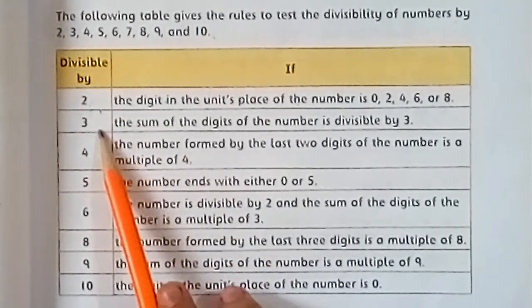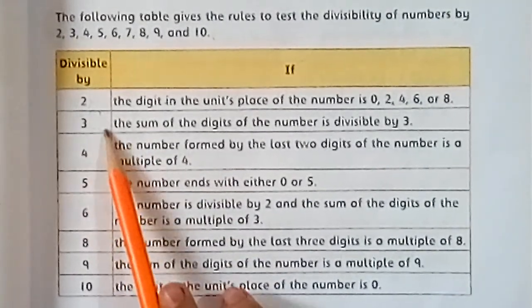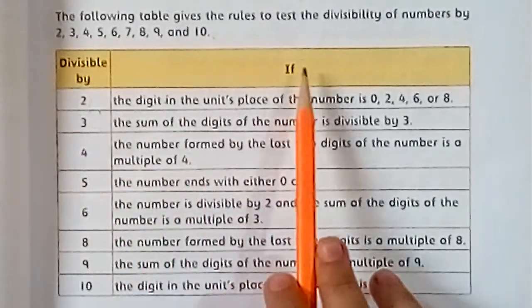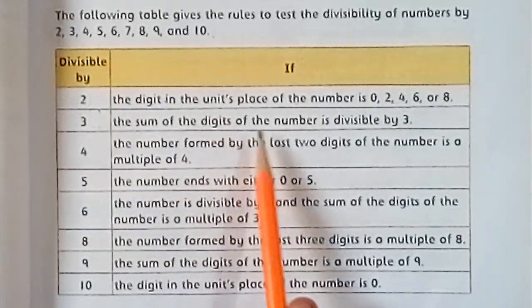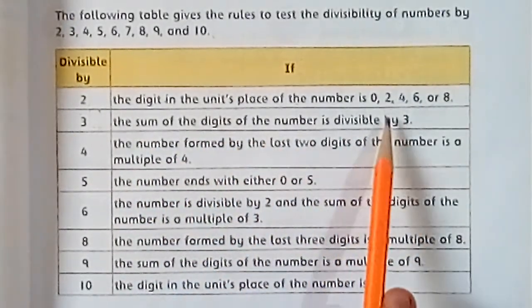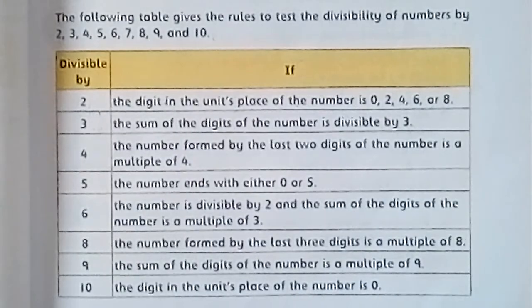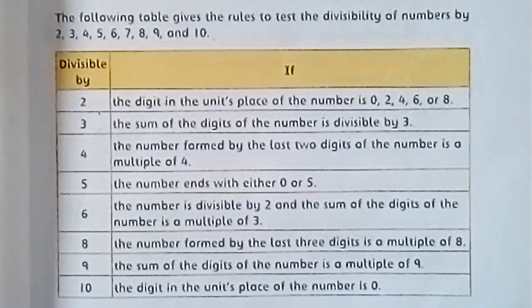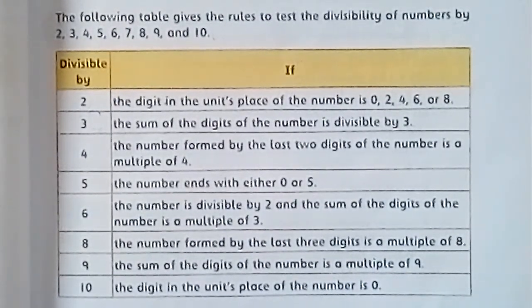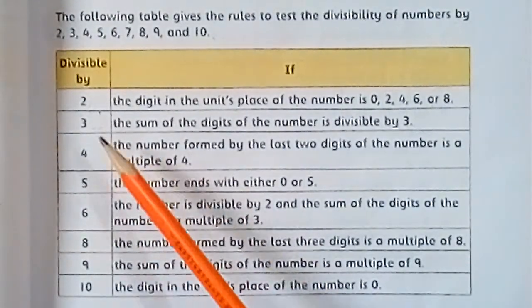The next one is divisible by 3. A number is divisible by 3 if the sum of the digits of the number is divisible by 3. If the sum of the digits is divisible by 3, then we can say that the original number is divisible by 3.